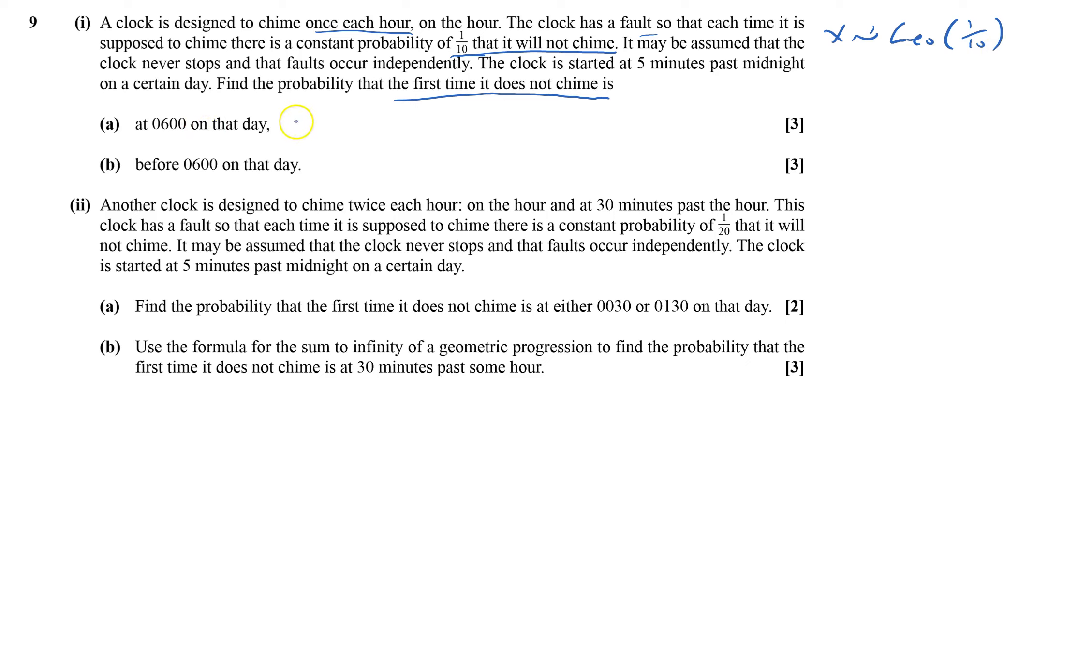At 6 on the day, that means I've got to have probability that X equals 6. That means it must have chimed properly five times and then one time when it didn't chime. And that is 0.059049.